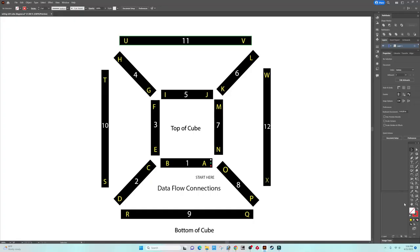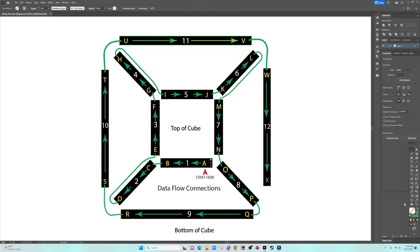Here is the layout of the LED strip placement on the cube. Starting at A, it will show the direction of the data. I also labeled the strip with the alphabet because this way you can't go wrong when connecting the strips together. A goes to B, B goes to C, C goes to D, and so on and so on.